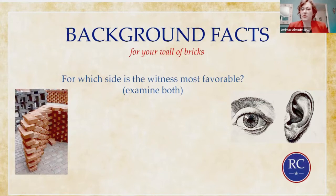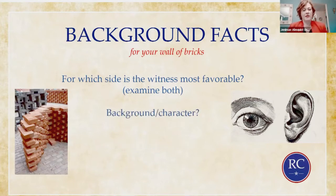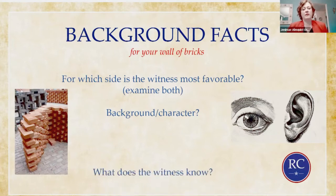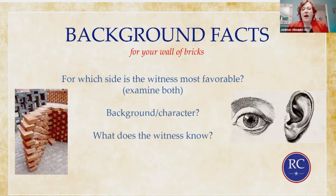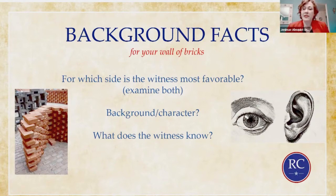For which side is the witness most favorable? You need to look at both so that you can be anticipating the other side's arguments and do a better job for your side. What is the person's background and character? Remember, we're telling a story. The jury doesn't want some plastic person up there on the stand — they want someone who's humanized, that they know something about, that they can learn from. What does the witness know? Obviously, a police investigator knows the evidence found at the scene, and a character witness doesn't really know if his or her friend was actually at the robbery. You can't tell a story through somebody who doesn't know what you're telling.